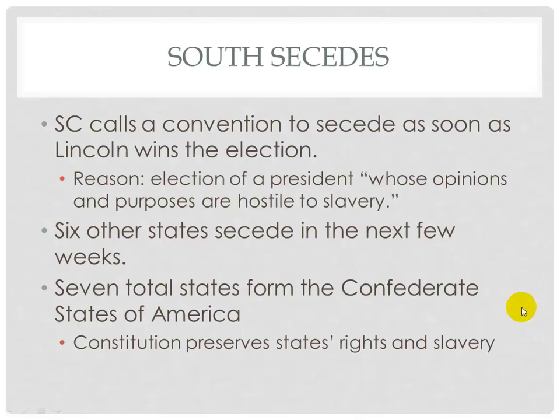South Carolina, which had long been in the forefront of Southern rights and pro-slavery agitation — as seen from the nullification crisis in the 1830s — was the first state to secede. On December 20th, 1860, a convention in Charleston declared unanimously that 'the Union now subsisting between South Carolina and other states under the name of the United States of America is hereby dissolved.' The constitutional theory behind secession was that the Union was a compact among sovereign states, and each state could withdraw by the vote of a convention similar to the one that had initially ratified the Constitution.